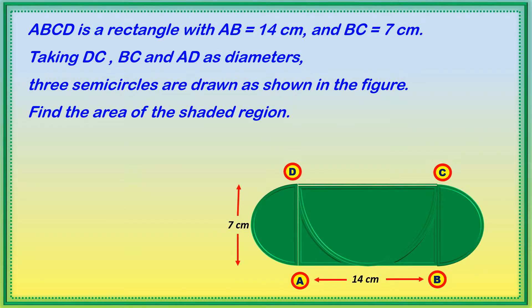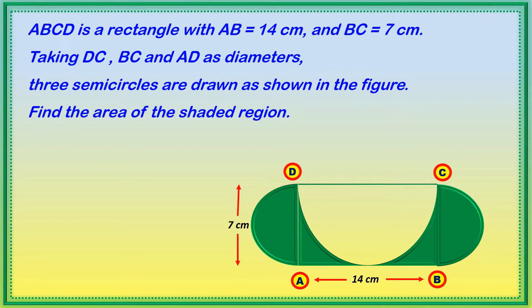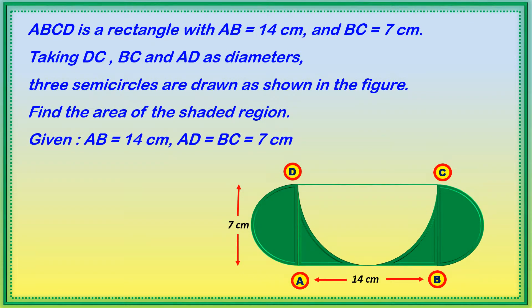Find the area of the shaded region. We have to find the shaded region. Given: AB is equal to 14 centimeters, and AD is equal to BC is equal to 7 centimeters.